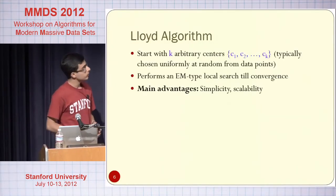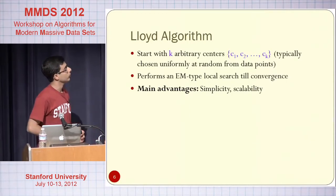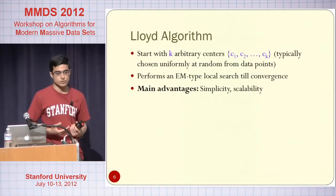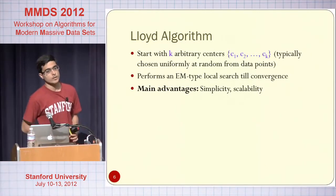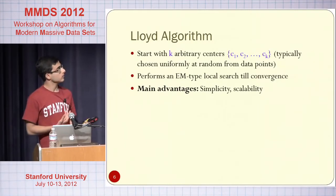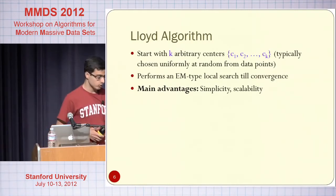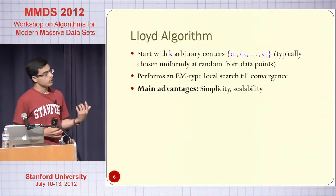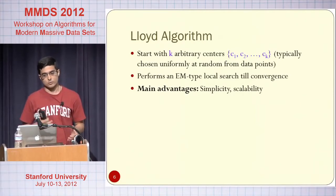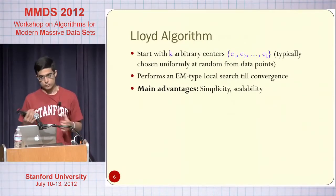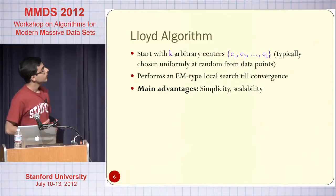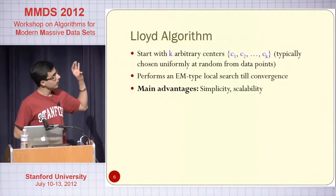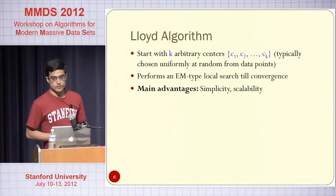The most widely used algorithm for K-means clustering is the Lloyd algorithm. The way it works is that it starts with K arbitrarily chosen centers, usually initialized uniformly at random from the set of data points. After the initialization, you do an expectation-maximization type local search until the clustering converges — given the set of centers you find the clusters, given the clusters you find the centers, and you continue. We will not care about the local search part; we will focus on the initialization part. This algorithm is actually pretty simple and scalable.